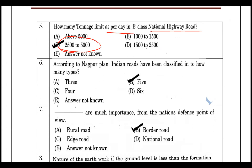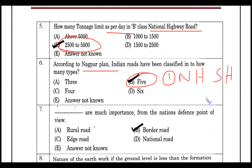The Nagpur Plan classifies Indian roads into five types: National Highway, State Highway, Major District Road, Other District Road, and Village Road. These are the five categories under the Nagpur Road Plan classification.